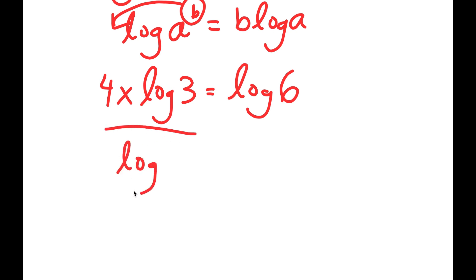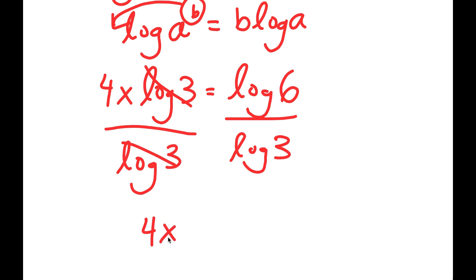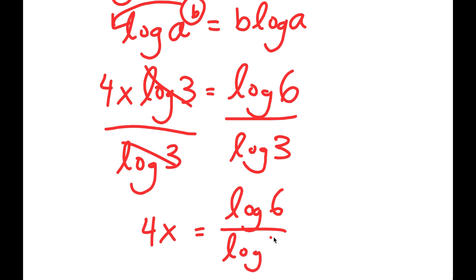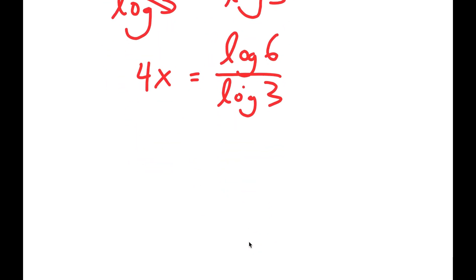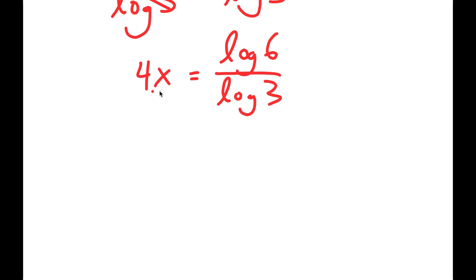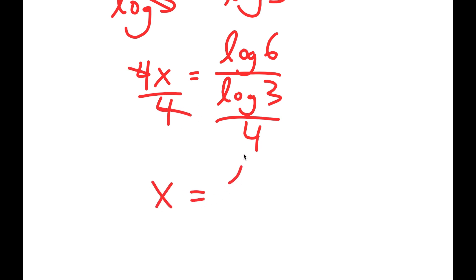Now, if I divide both sides by log 3, these two cancel out, and I get 4x is equal to log 6 over log 3. Finally, I'm going to divide both sides by 4. So these two cancel out, and I get x is equal to log 6 over 4 times log 3.